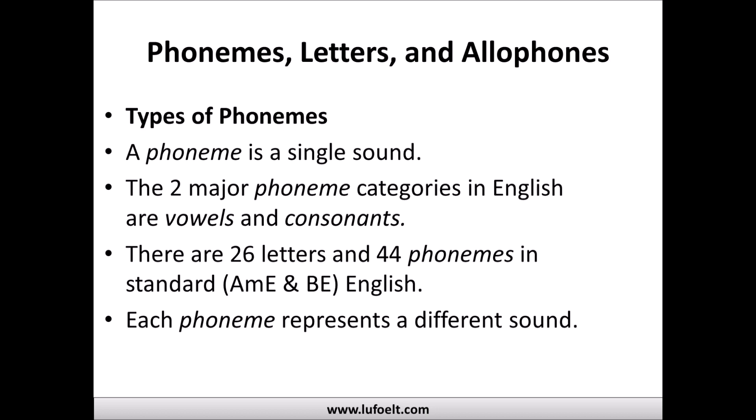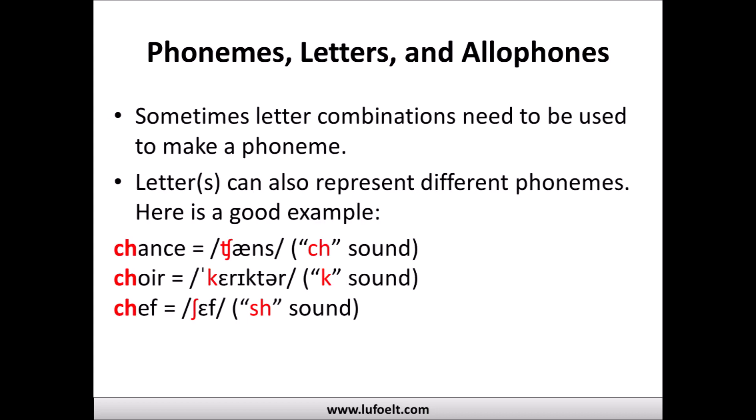Phonemes are represented by a single letter or a combination of letters. In English there are two major phoneme categories: vowels and consonants. As you may know, there are 26 letters in the English alphabet and 44 phonemes in standard American and British English, and each phoneme represents a different sound.